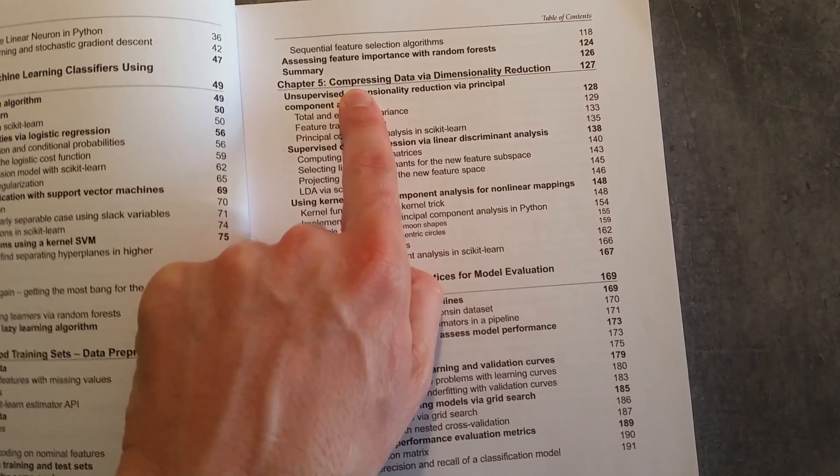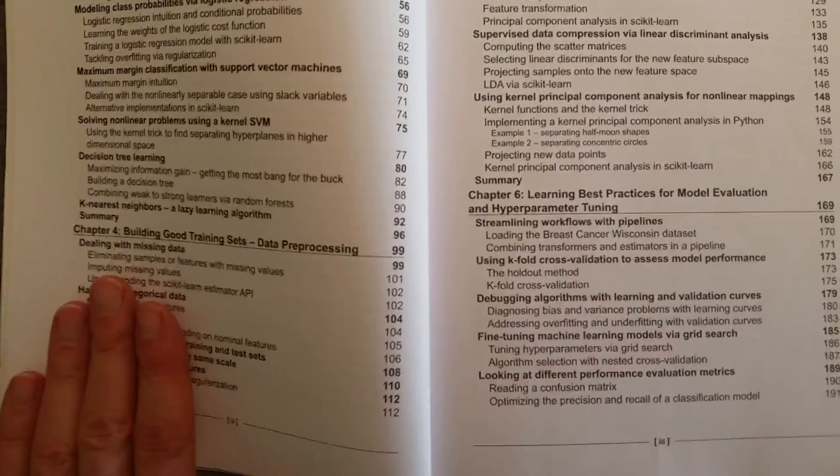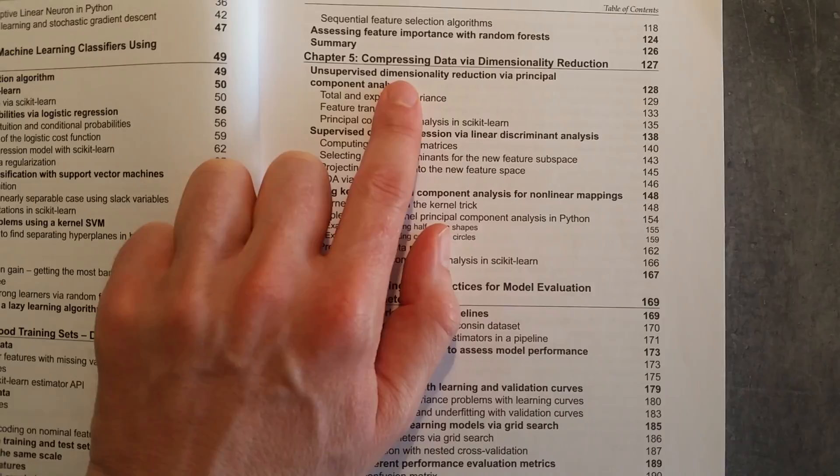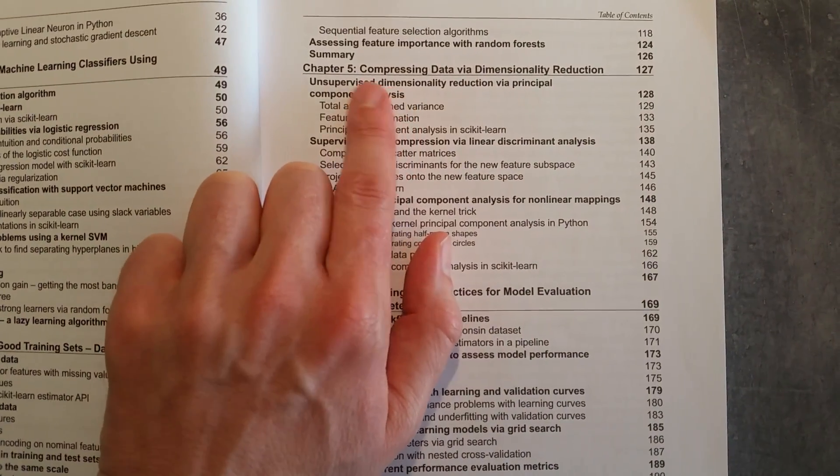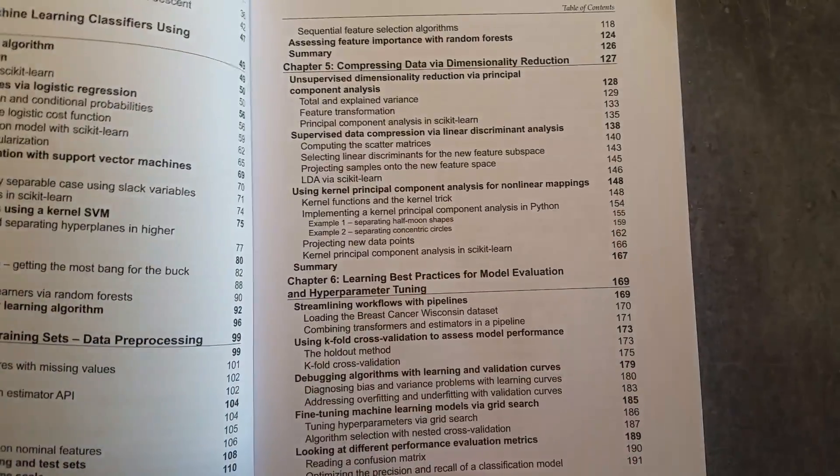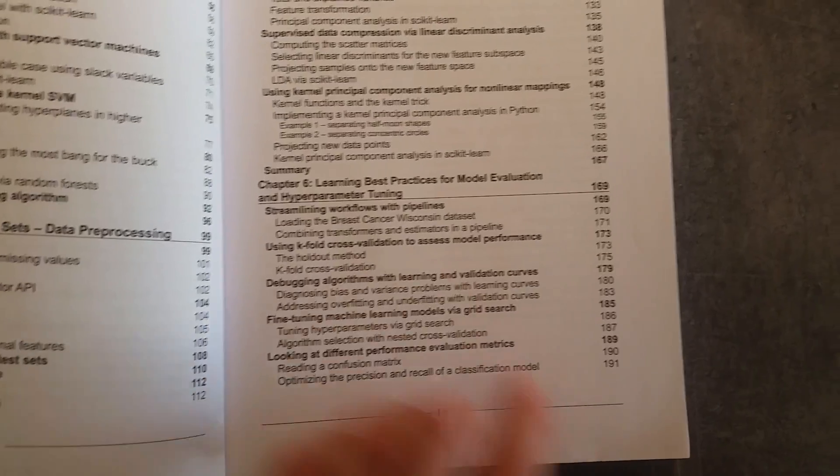And then we have chapter four, building good training sets, data pre-processing, obviously, which is a really important part of any machine learning undertaking. You've got to get your data right. Chapter five, compressing data and dimensionality reduction. Very important part of machine learning too.